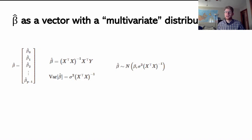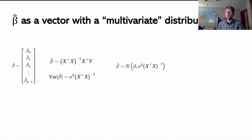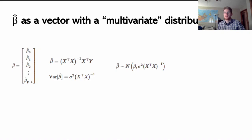Now, as we talked about in the previous video, beta hat is a vector of parameter estimates for as many predictors plus the intercept that I have in this model. So if I only have two predictors, then beta hat is a vector of three values. If I have seven predictors, beta hat is a vector of eight values.